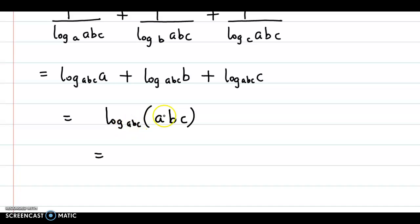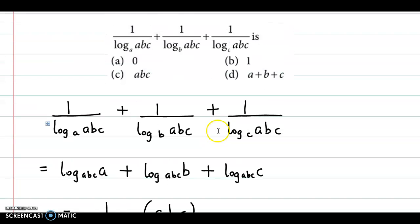Now, this is the form log A to the base A and we know that the value of such a log is 1. So log of ABC to the base ABC is equal to 1 and the correct answer is option B.